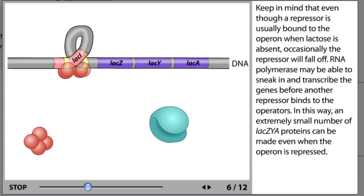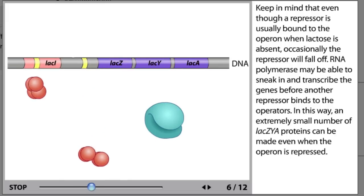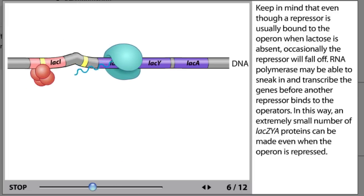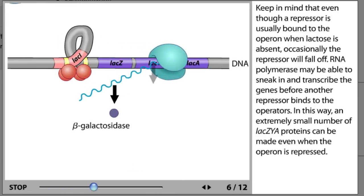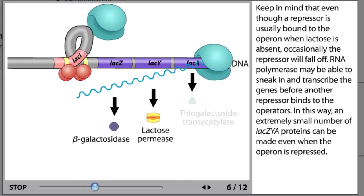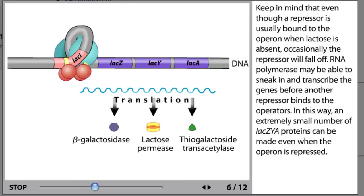Keep in mind that even though a repressor is usually bound to the operon when lactose is absent, occasionally the repressor will fall off. RNA polymerase may be able to sneak in and transcribe the genes before another repressor binds to the operators. In this way, an extremely small number of lacZYA proteins can be made even when the operon is repressed.